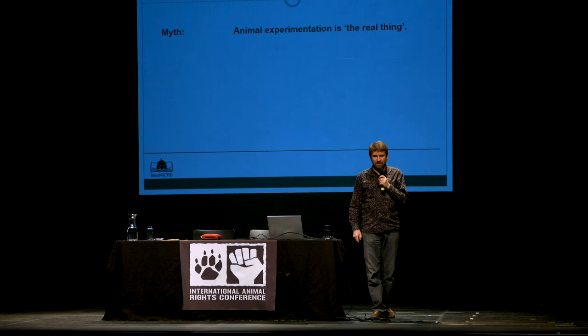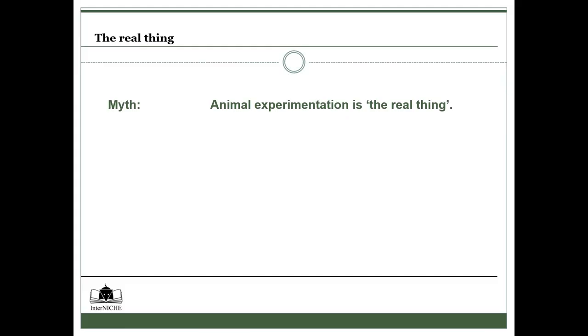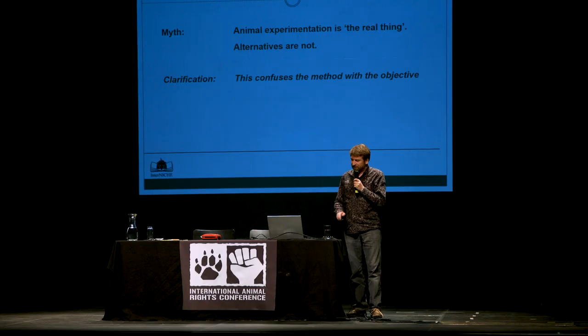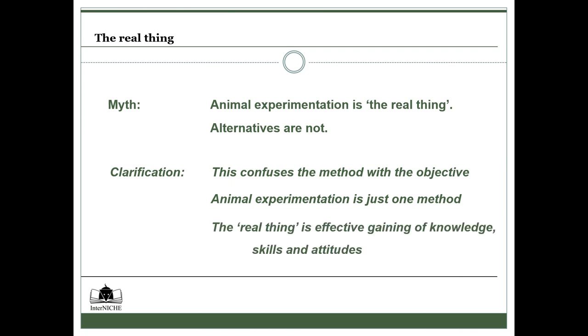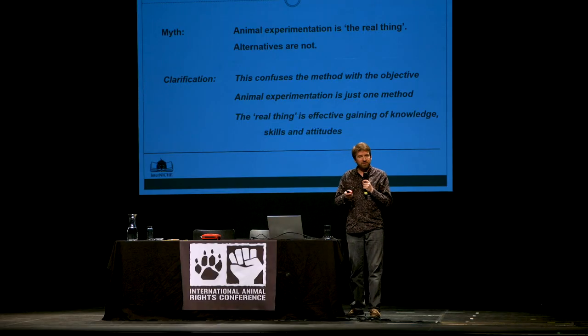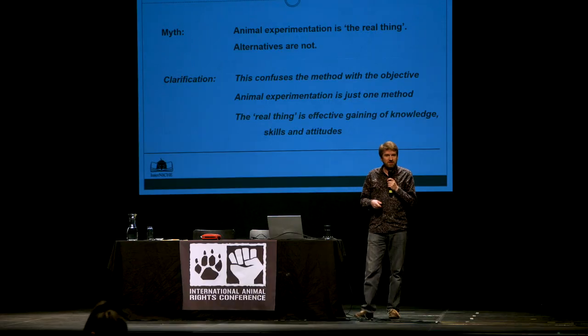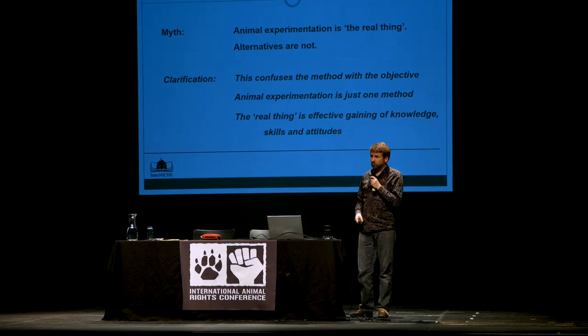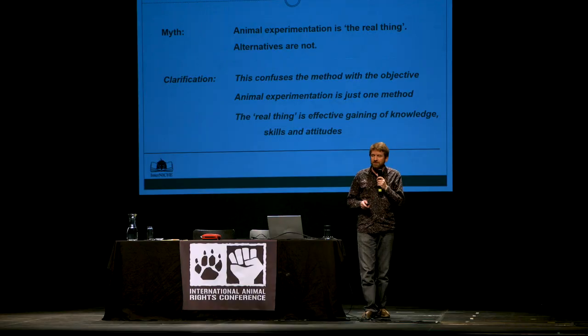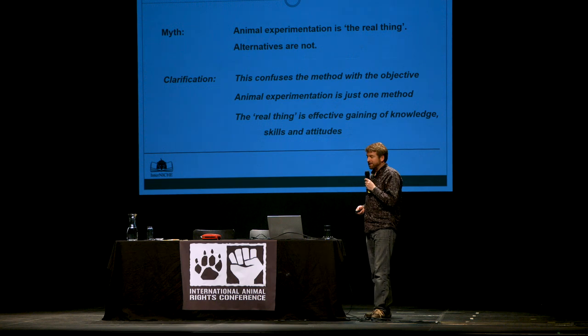Sometimes you'll come across this myth that animal experimentation is the real thing, and that alternatives are a mediocre approximation. But this isn't true. It confuses the method with the objective within education. Animal experimentation is just one method. The real thing is actually how effectively students gain knowledge, skills, and positive attitudes. This is a paradigm shift. A lot of teachers think of animal experiments and dissections as the way they've always done it. But it's better to look at what you're really trying to achieve in terms of teaching objectives, and then finding humane ways to achieve that.